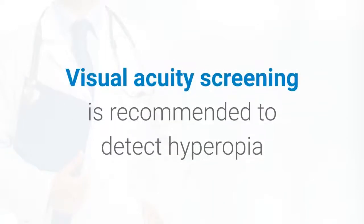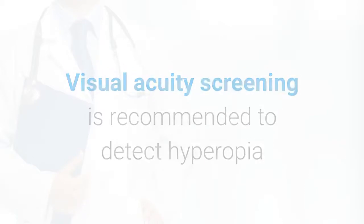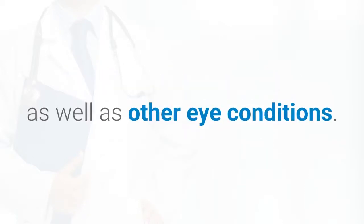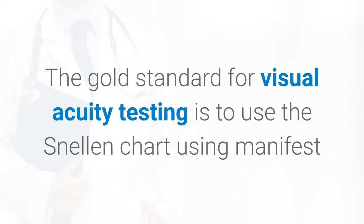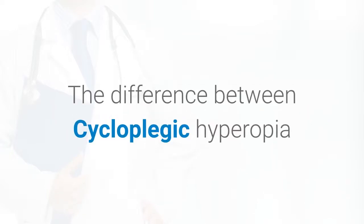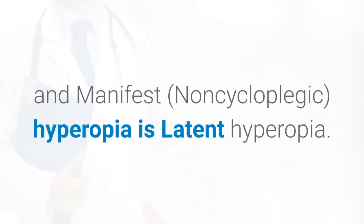Visual acuity screening is recommended to detect hyperopia as well as other eye conditions. The gold standard for visual acuity testing is to use the Snellen chart using manifest and cycloplegic refraction. The difference between cycloplegic hyperopia and manifest hyperopia is latent hyperopia.